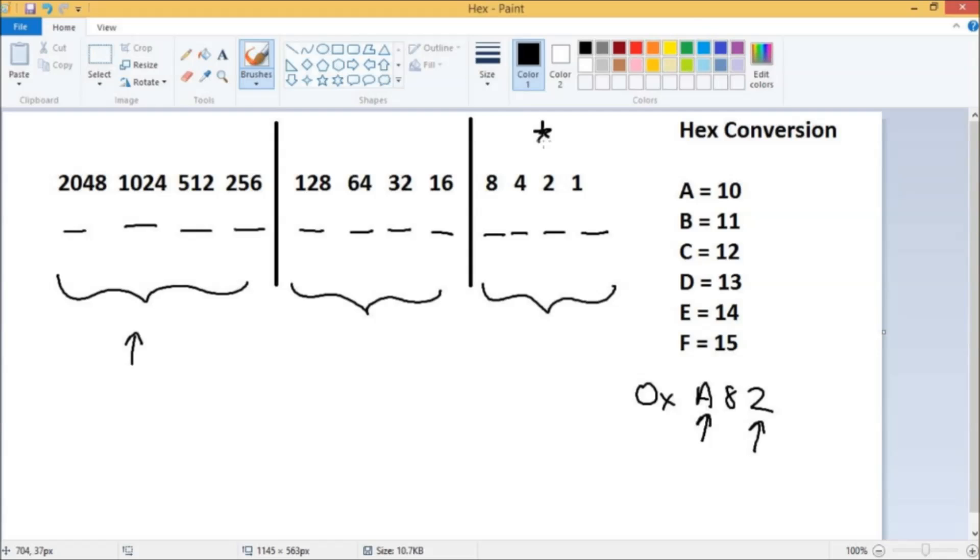So when we were studying binary to decimal and decimal to binary, we were using these little place values. If we needed to find something like I don't know the number 5, it was really easy. We would just take, you know, this 8 would be too much so that would be a 0. We would turn 4 on. 2 would be too much because 4 and 2 would be 6, and then we would need that 1 to give us 5. So this is our decimal value and this is our binary value.